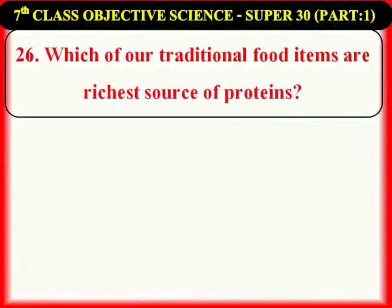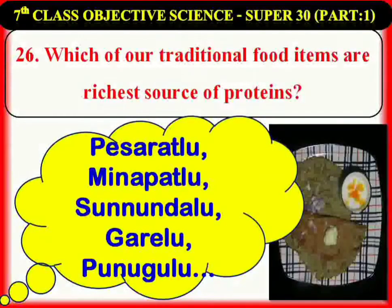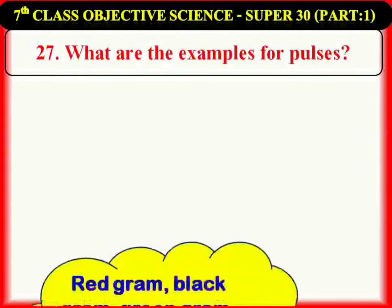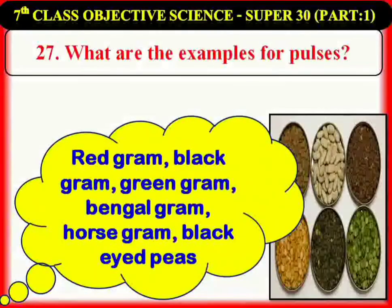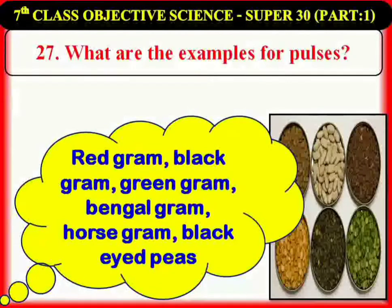Which of our traditional food items are the richest sources of proteins? Pesarattu, Minapattu, Sunnundalu, Garellu, Punnugulu, etc. What are the examples for pulses? Red gram (Kandibadalu), black gram (Uddibadalu or Minumulu), green gram (Pesarabadalu), Bengal gram (Sanagabadalu), horse gram (Ullavadalu), and black-eyed peas or cow peas (Alasandalu).